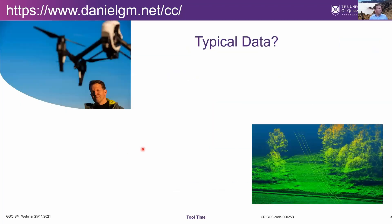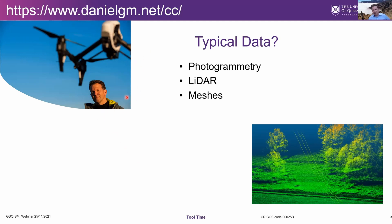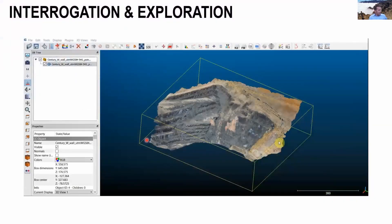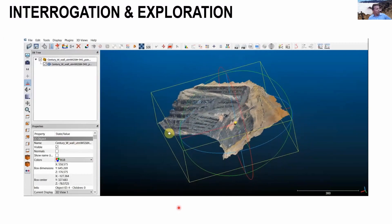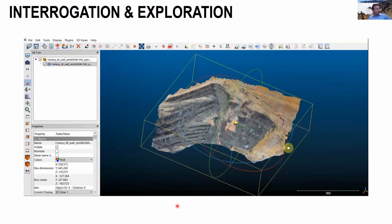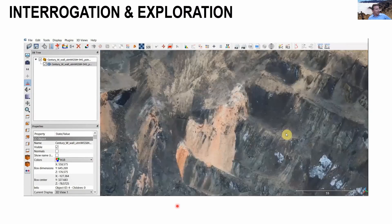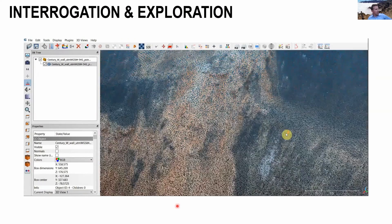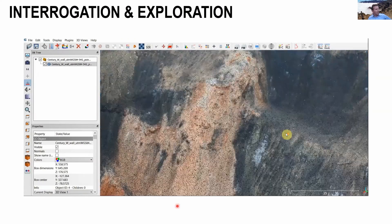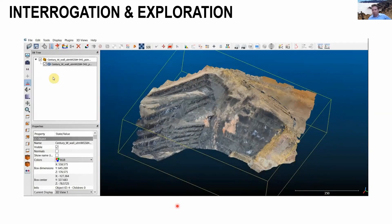A typical input that goes into CloudCompare is things like point clouds from photogrammetry or from LiDAR, but you can put meshes in there. I got involved in CloudCompare because I'm interested in using drones and sensing the landscape as a mapping tool for geoscientists. Here's an example of an open pit where we flew a drone survey and generated a point cloud — that's a very photorealistic model, but as you zoom in, you can see it's actually composed of lots of tiny little points which each have a normal, an orientation to them.